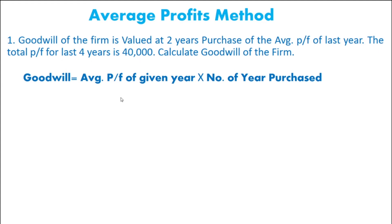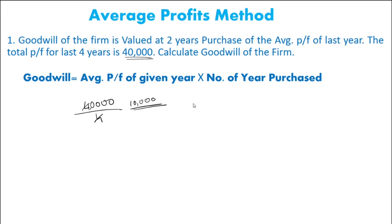For example, the total profit of the last 5 years is 40,000. You calculate the average: divide by the number of years. Then multiply by the number of years of purchase — about 2 years. So the answer is 20,000. This is the goodwill under the average profit method: 20,000.